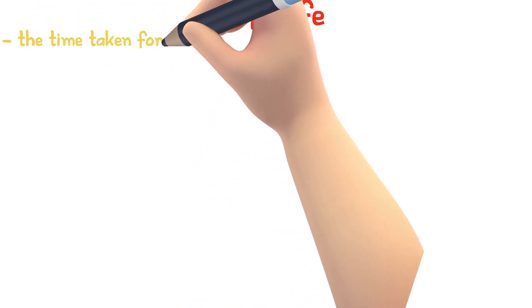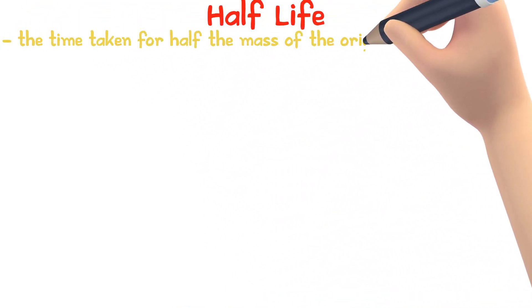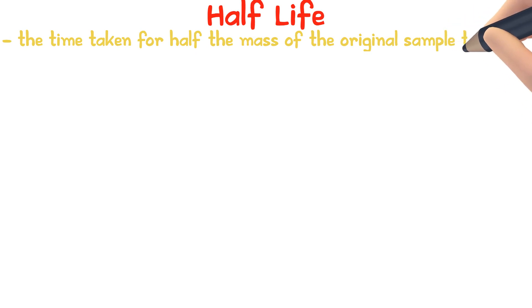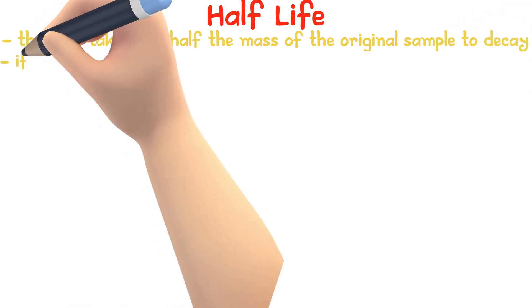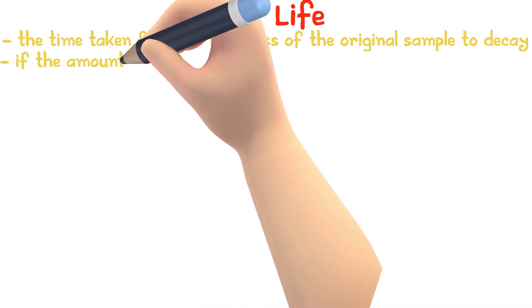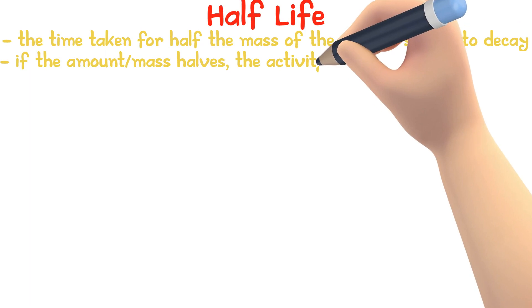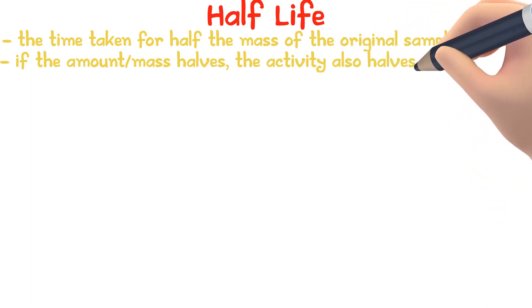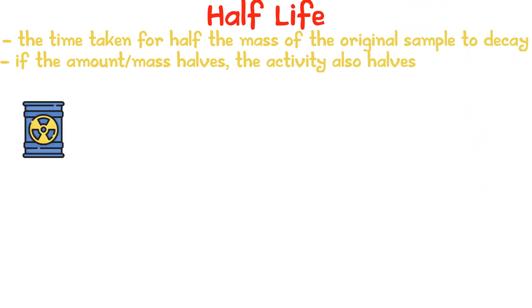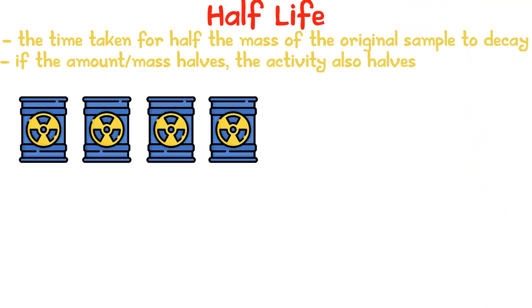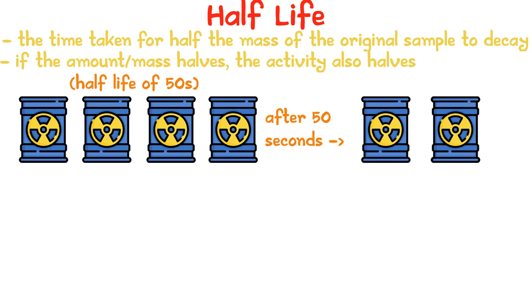The half-life of a radioactive sample is the average time taken for half the original mass of the sample to decay. If the amount halves, the activity of the radioactive material also halves. If there was 200 grams of a radioactive material and it had a half-life of 50 seconds, after 50 seconds there would only be 100 grams of the material left.